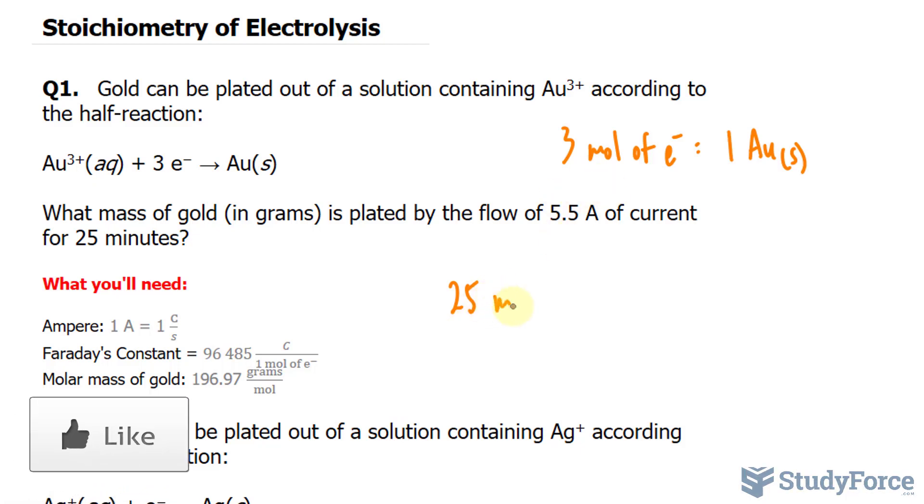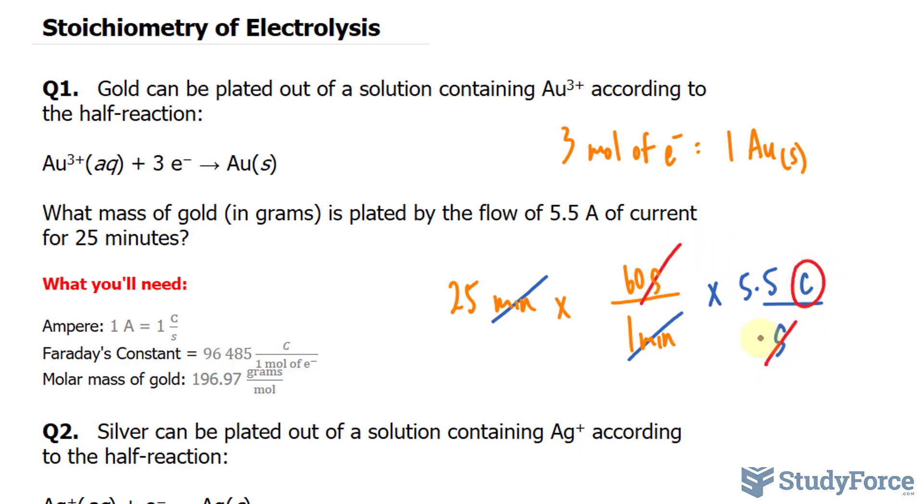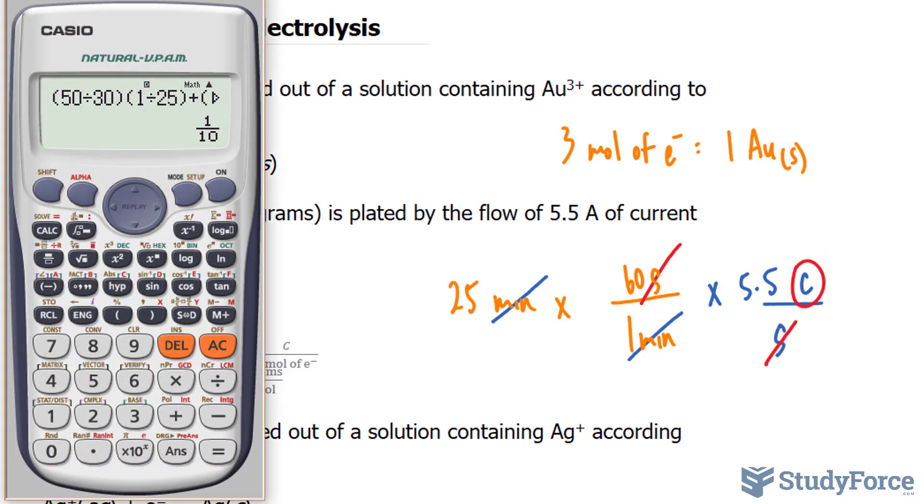So 25 minutes converted into seconds, we'll use the conversion ratio that 1 minute is equivalent to 60 seconds. Using dimensional analysis, this will cancel out with that, leaving us with the amount of seconds. I'll multiply this number by 5.5, and the reason why I can do that is because amperes is the same thing as coulombs per second. This will cancel out the seconds unit, leaving us with the amount of coulombs that is flowing within this 25 minute period.